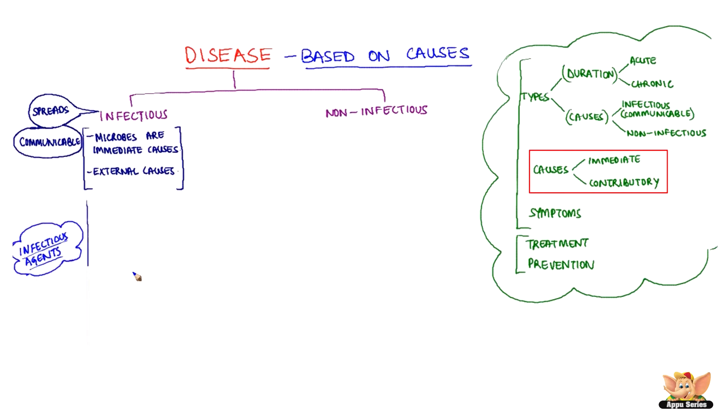The organisms that can spread the infectious disease are called infectious agents. Virus, bacteria, fungi, protozoa and worms are some of the infectious agents.